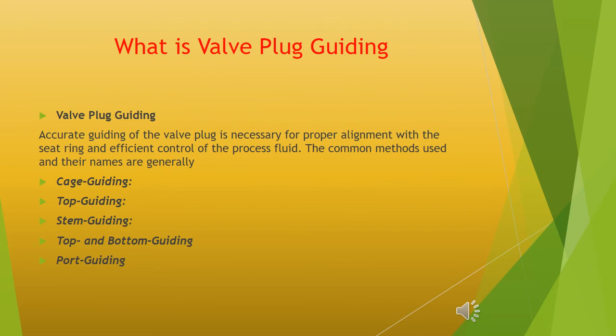What is valve plug guiding? Accurate guiding of the valve plug is necessary for proper alignment with the seat ring and efficient control of the process fluid. The common methods used and their names are generally: cage guiding, top guiding, stem guiding, top and bottom guiding, and port guiding.